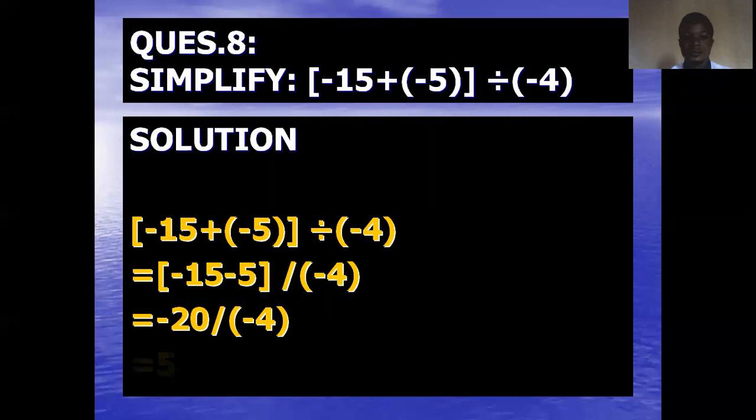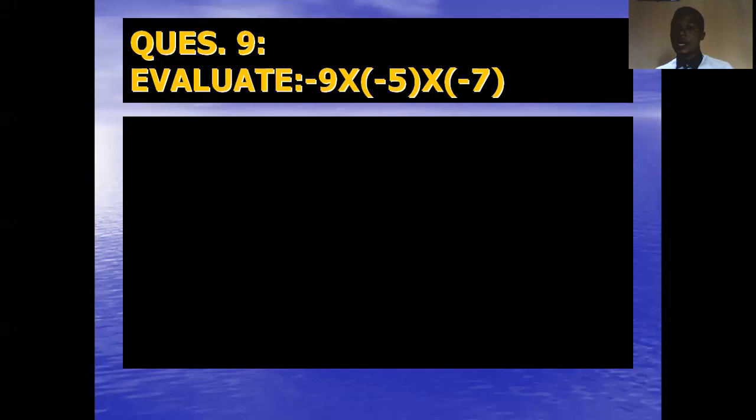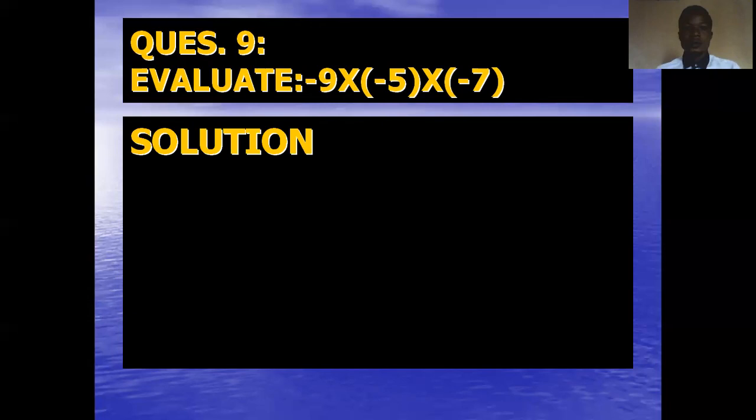Question nine: minus nine times minus five, then times minus seven. Minus nine times minus five gives positive forty-five. Then positive forty-five times minus seven — different signs — the answer must be negative, giving minus three hundred and fifteen.